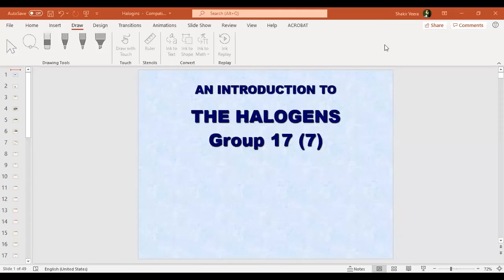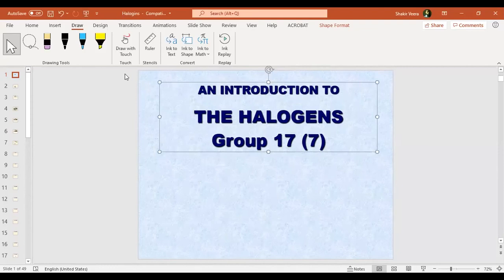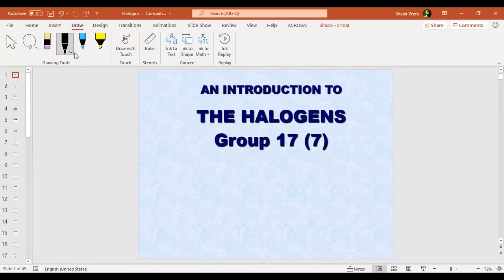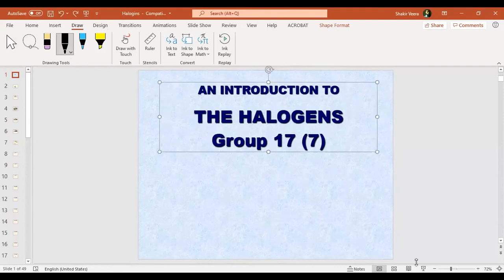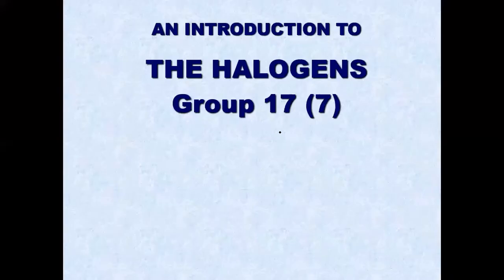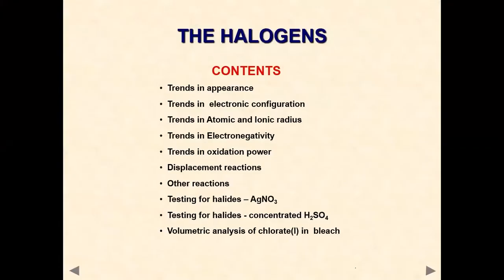Bismillahirrahmanirrahim, Assalamualaikum warahmatullahi wabarakatuh. Today we are going to start halogens, which is also known as group number 17 — some also call it group 7. The elements in this group are fluorine, chlorine, bromine, iodine, and astatine. This is group 17 and these elements are diatomic.